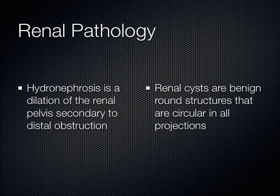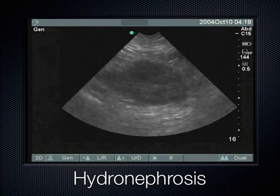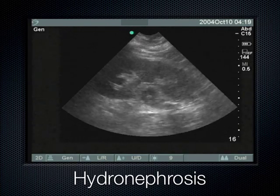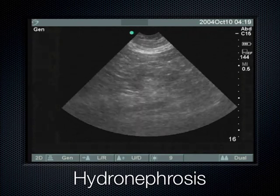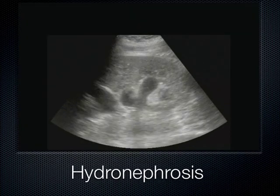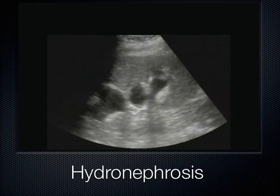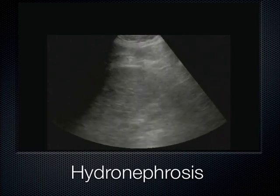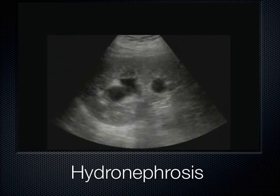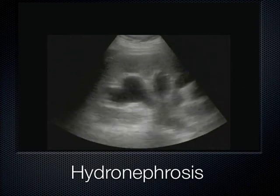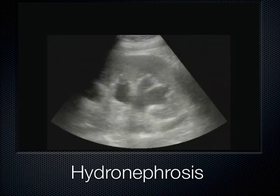If you see anechoic fluid in the center or pelvis of the kidney, that's hydronephrosis — fluid building up in the kidney. Mild hydronephrosis has a glove-like formation with a little bit of splaying in the center; the fingers of the glove go out toward the cortex. As it progresses, those projections become more prominent but still coalesce at the renal sinus. We can still make out plenty of cortex.